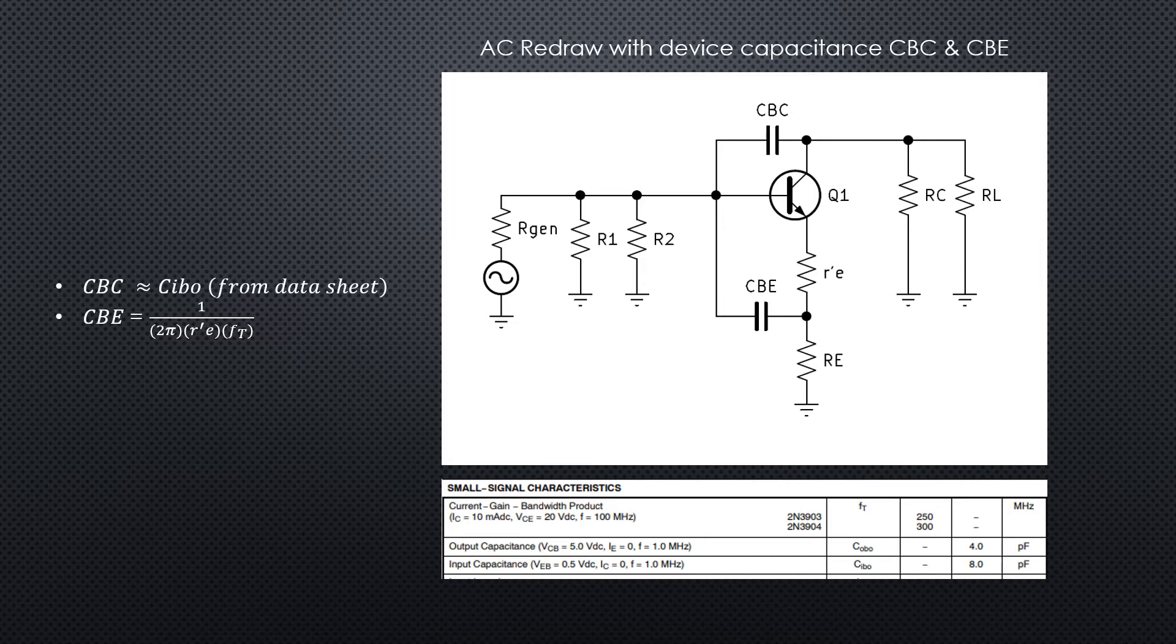Now let's consider the device capacitance of the transistor. We've got two new capacitances to look at: CBC, which is the capacitance base to collector, and CBE, which is the capacitance base to emitter. CBC is approximately equal to CIBO, the input capacitance included on the data sheet.